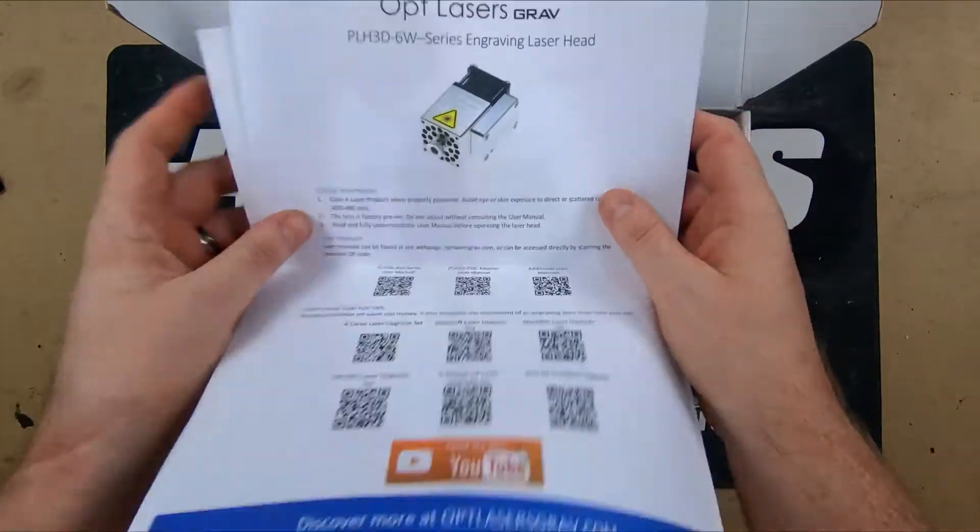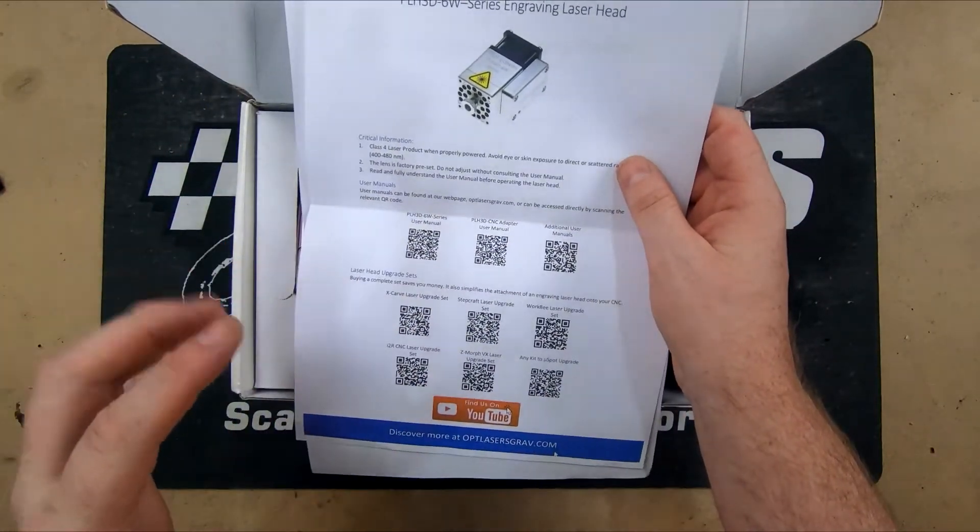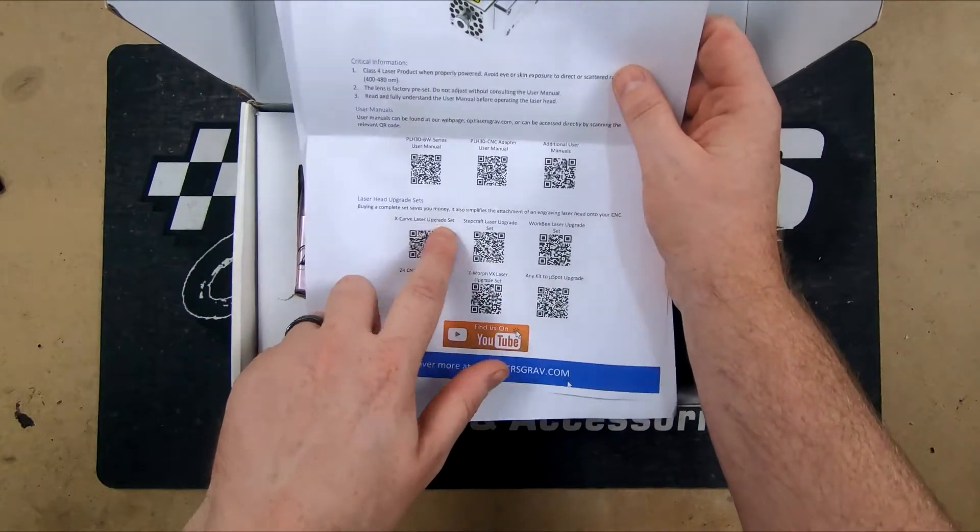First up they give you a nice little QR code so you can bring out the manuals for the different parts. So here's the ones here: X-Carve, StepCraft, Workbee.